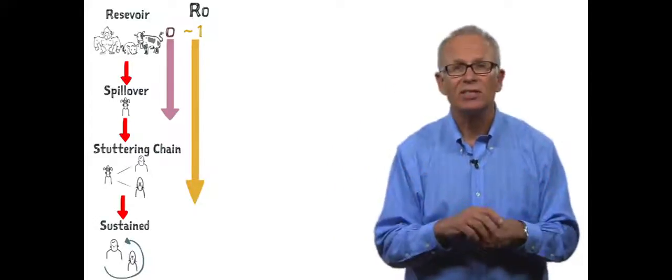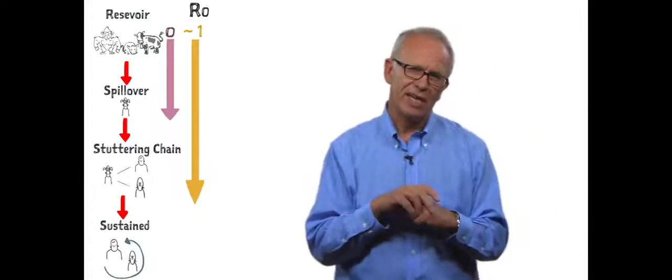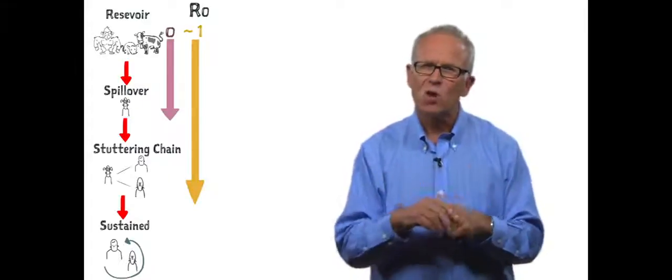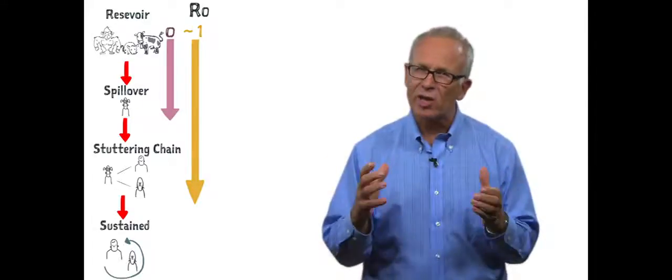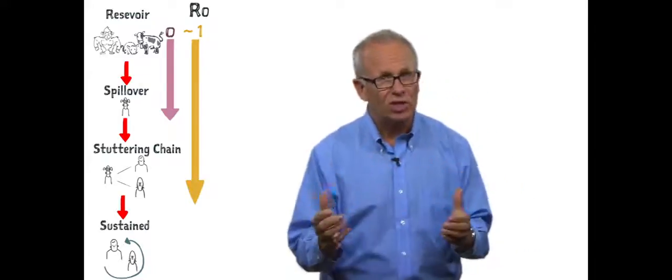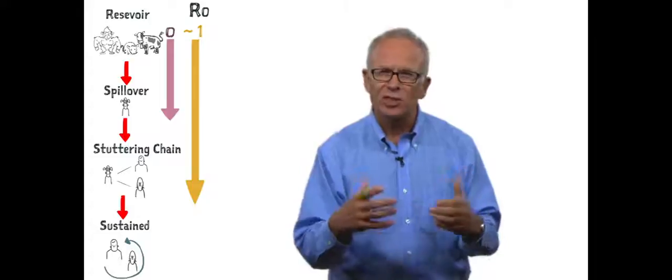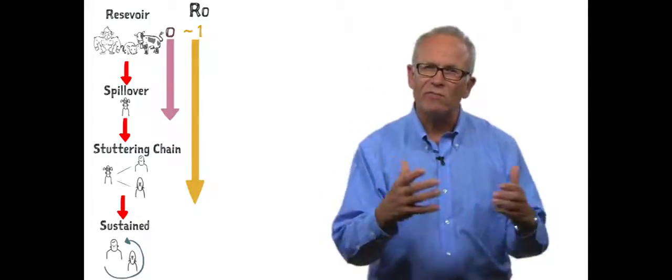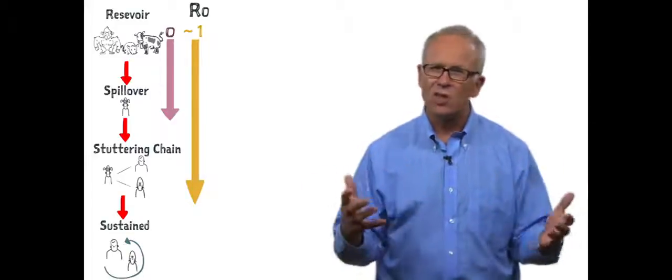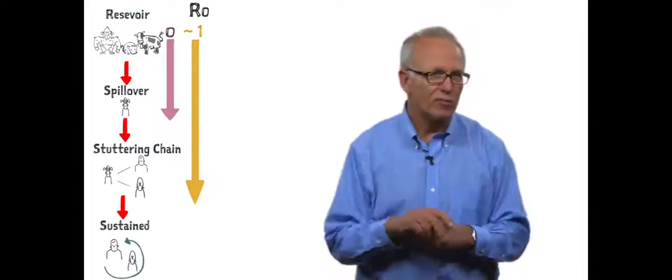A good example of this is monkeypox virus in the Congo Basin. Here, children have become infected when they catch and eat Gambian rats. Infected children may infect a small number of other children, but the chains of transmission are short, and so the infection disappears locally until the next spillover event occurs when another child becomes infected from another rat.